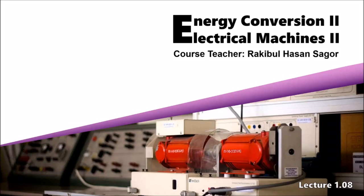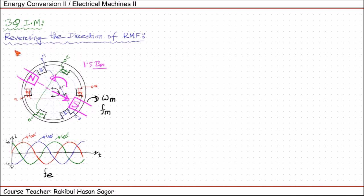Let's start today's class. In today's lecture we will start with reversing the direction of rotating magnetic field. In our last class we have seen that if we have a stator configuration connected with three-phase supply, with the red current through A, green through C, and blue through B, there is a creation of rotating magnetic field and it rotates in the anticlockwise direction.